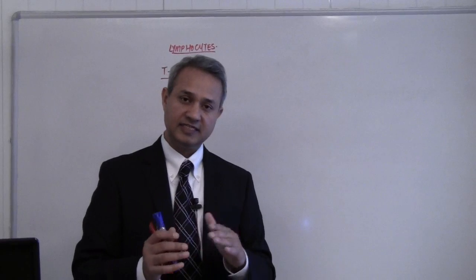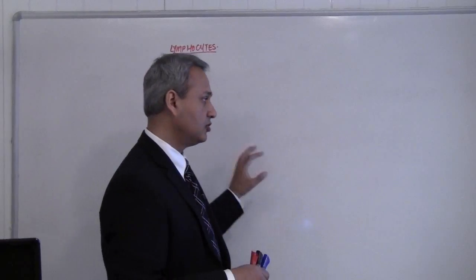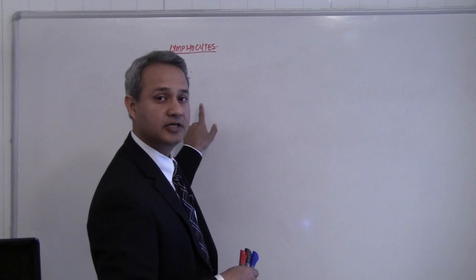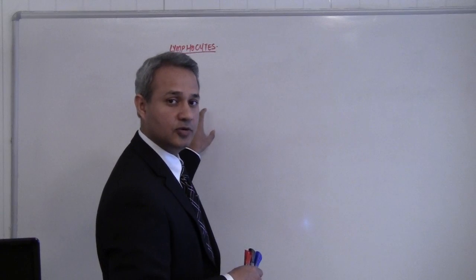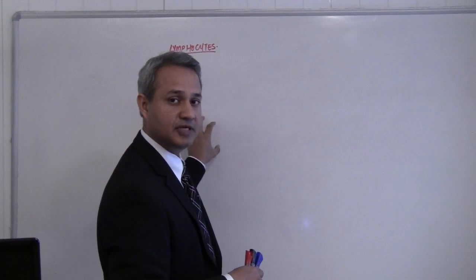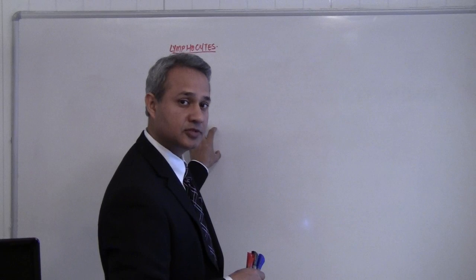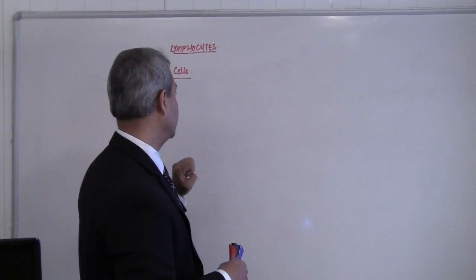After the T cells, we will talk about B cells. This is part of acquired immunity. T cells and B cells are acquired immune system components, and we are talking about T cells today.